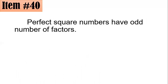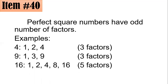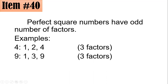We should recall that perfect square numbers have an odd number of positive factors. For example, 4 equals 1 times 4 or 2 times 2. Since 2 is duplicated, we write it once, so 4 has 3 factors: 1, 2, 4. Similarly, 9 equals 1 times 9 or 3 times 3, so 9 has 3 factors: 1, 3, and 9.